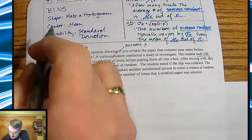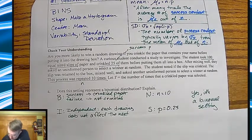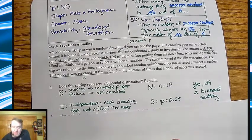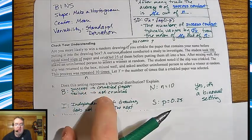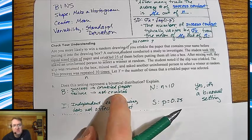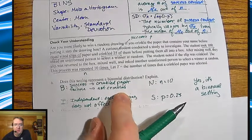So the first thing you need to do, again, remember according to what we're doing up here, is establish that you do have a binomial distribution. So define your success as crinkled papers. Failure is not crinkled. Don't get fancy with this. Don't say smooth. Just say it's crinkled or it's not crinkled. Okay?